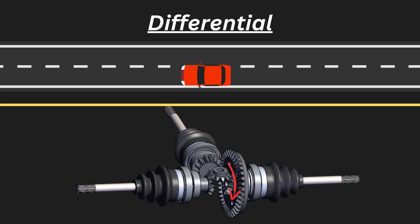Suppose a car is going straight — both wheels have to travel at the same speed. In this case, the spider gear won't spin on its own axis at all. Instead, it stays meshed with the pinion gears and everything travels as one unit, as if it's one big axle.